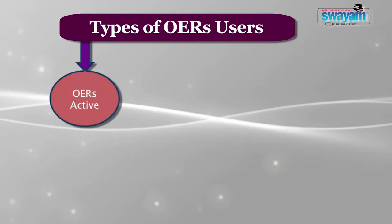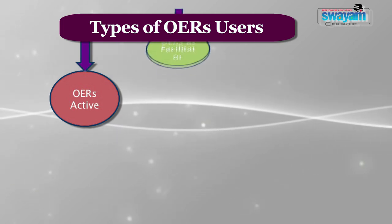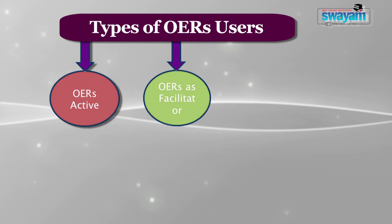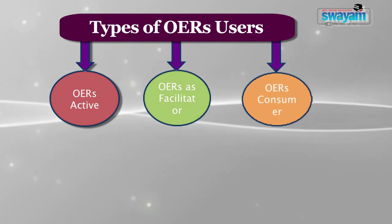There are many types of open educational resource users. Open educational resources specifically, and open education in general, give a foundation for other general teaching practices to benefit. But practitioners and educators are quite unaware of how to use them effectively. Analysis of research results on open educational resources indicates some common categories of users: first, OER Active; second, OER as Facilitator; and third, OER Consumer.